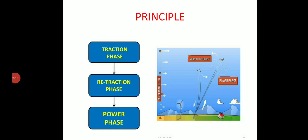Principle of kite power generation: This happens in three phases - traction phase, retraction phase, and power phase. Traction phase and retraction phase happen in the sky up in the air. Power phase is connected to the ground.